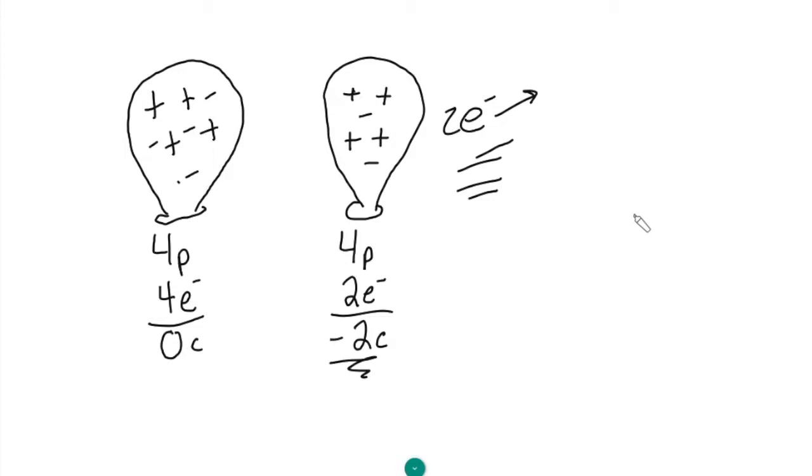Now if I had the same balloon with the same four protons, and I had one, two, three, four, and I gained two electrons. So now I have two electrons that are coming in. Now I would have four protons, I would have six electrons. And then I would have a charge of minus two coulombs. So now we can see that now I have an excess.